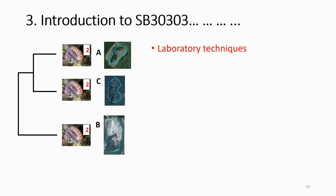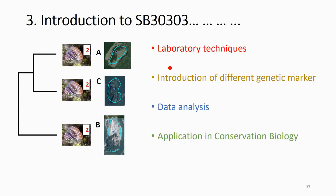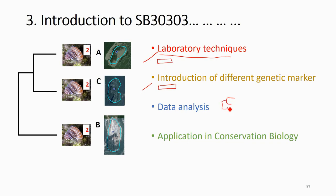This course is divided into four parts. In the first few weeks you will learn molecular techniques — the lab techniques including concept, theory, and practical work. In the second part you will learn about different types of genetic markers — the parts of the genome used to study phylogenetic relationships. After learning how to obtain DNA sequences, in the third part you will use the sequences to reconstruct the phylogenetic tree using several data analysis methods. Finally, in the fourth part, you will learn the application — how to use this information in conservation biology to solve biodiversity and conservation issues.